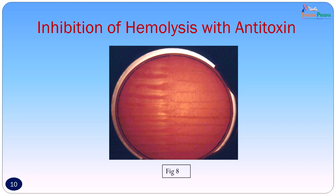To confirm that the isolate was Clostridium tetani, a blood agar plate was taken. On half the plate antitoxin was spread and streaks of the organism were made across the plate. On the half with no antitoxin, beta hemolysis was inhibited, while the half with the antitoxin showed beta hemolysis. Swarming was also inhibited on the half where there was no antitoxin. This confirmed that the organism was Clostridium tetani, because the beta hemolysis and swarming had been inhibited by the antitoxin of Clostridium tetani.